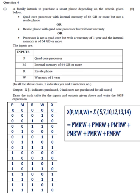Question 4, Part 1: the truth table has been shown. SOP is P dash M R dash W plus P dash M R W plus P M R W dash plus P M R dash W plus P M R W dash.